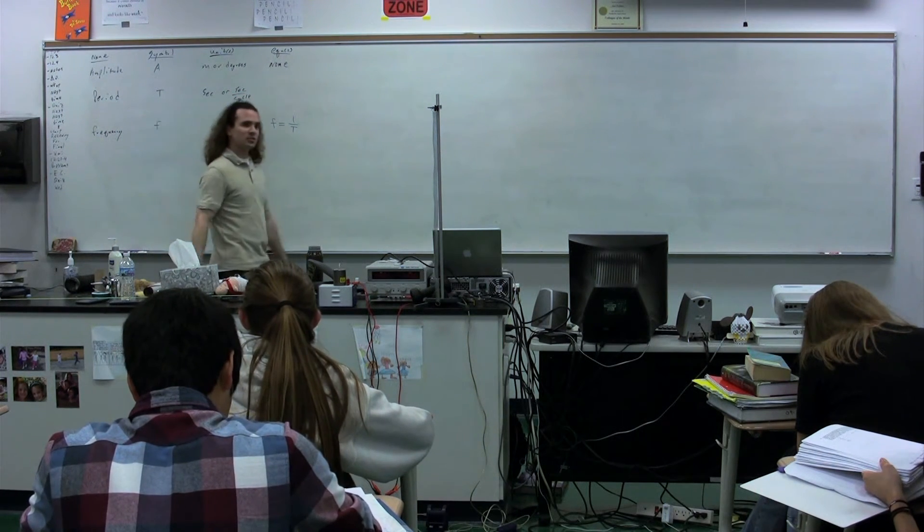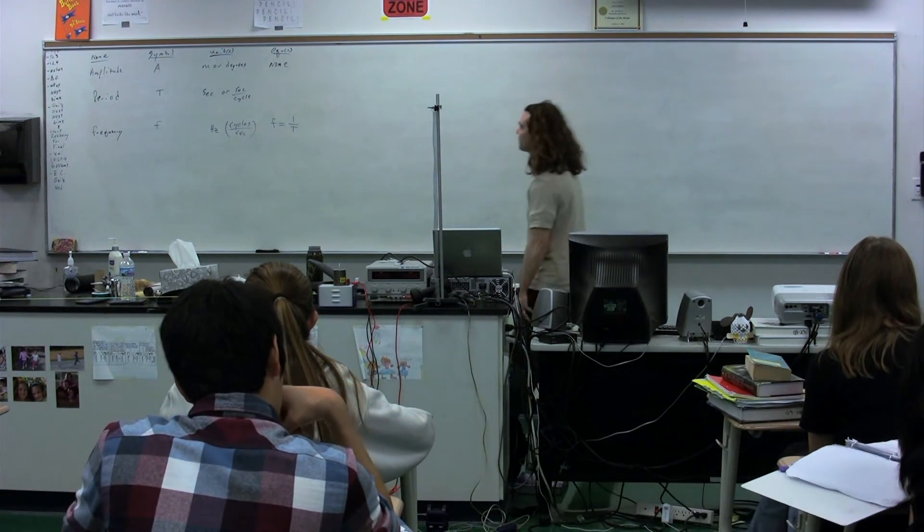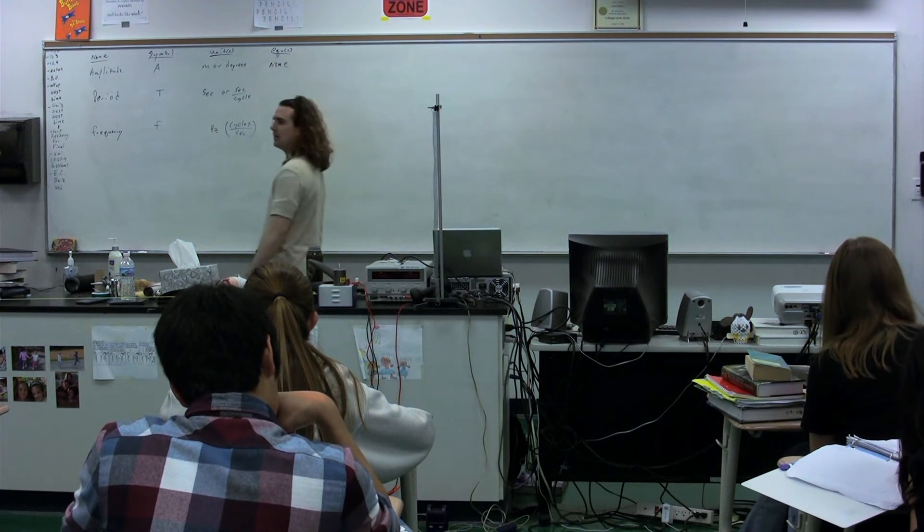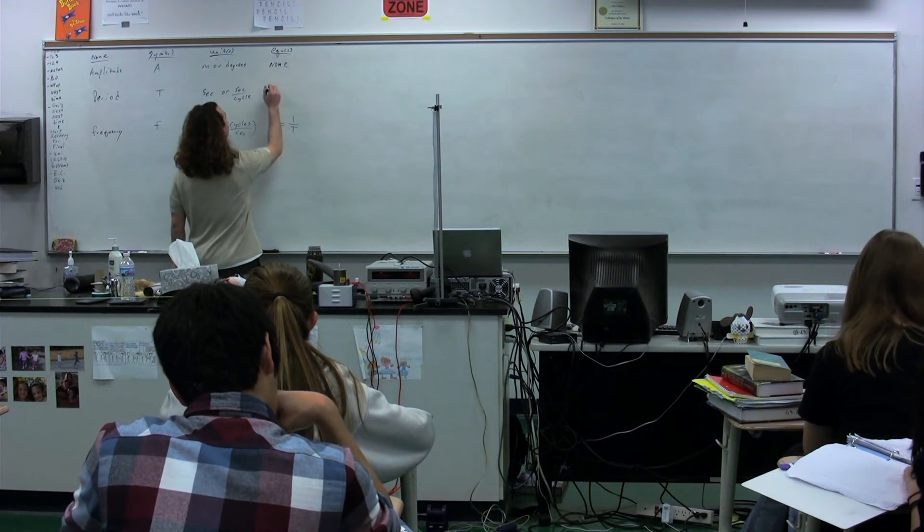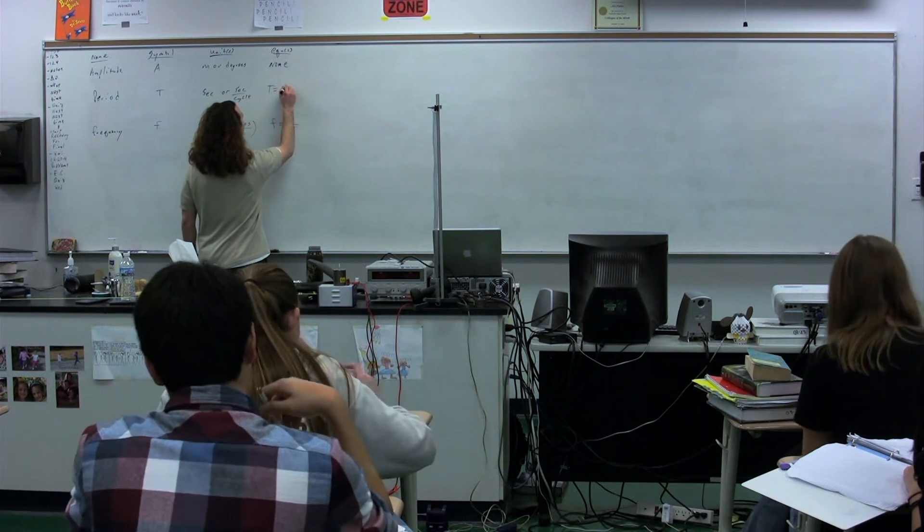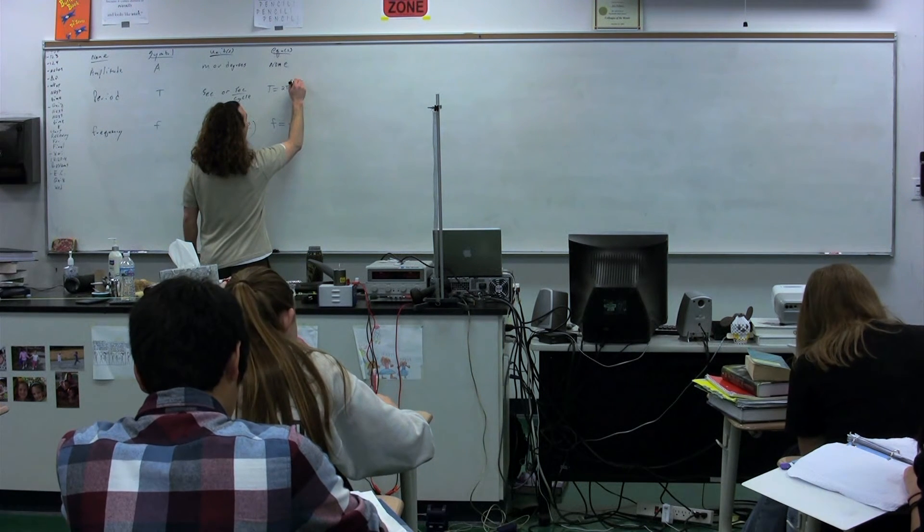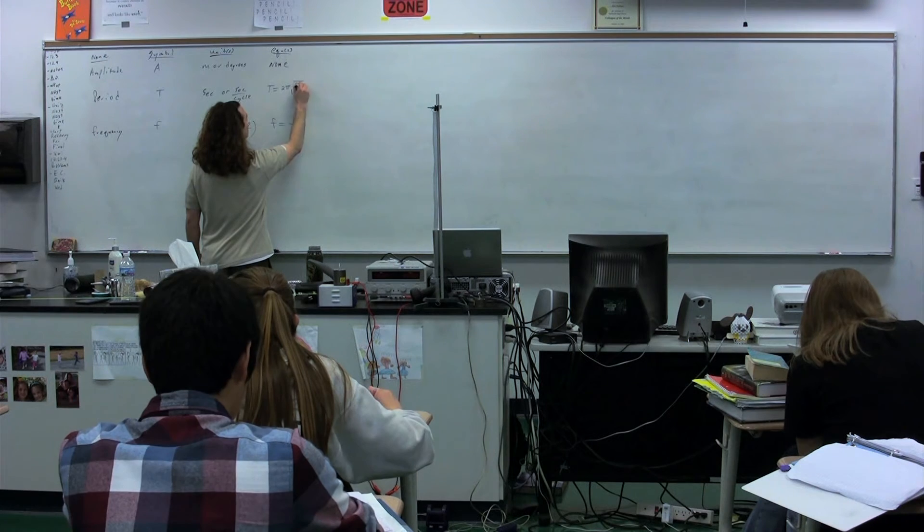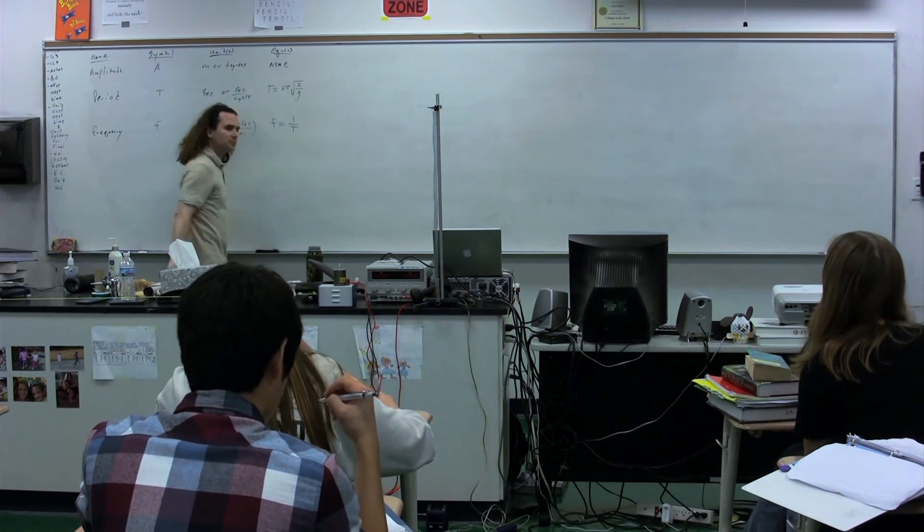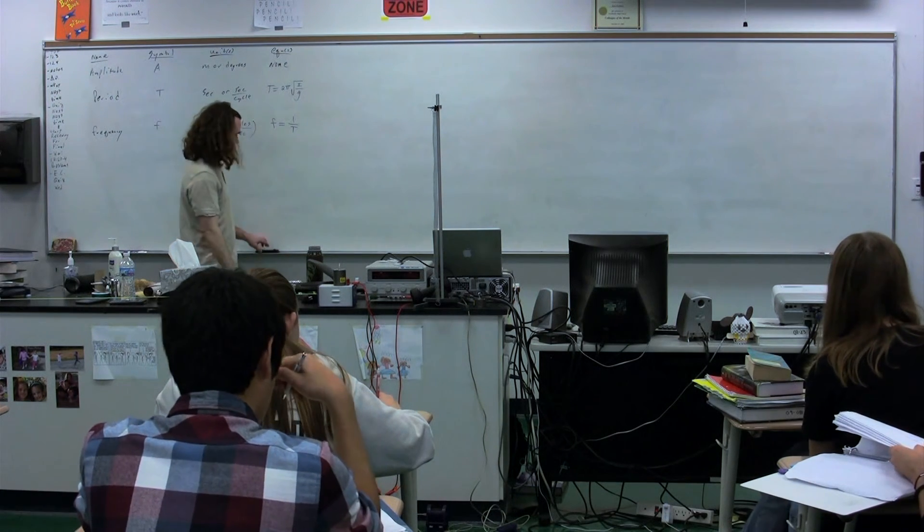So by definition, it's the number of seconds it takes per cycle, so you can call it seconds or seconds per cycle. We have two different equations for period. Period equals two pi square root of... I think that's an i over g. It's not an i. What is the letter there? Millie? L.